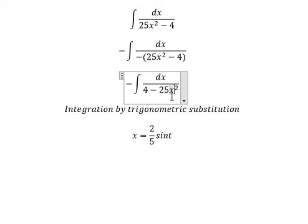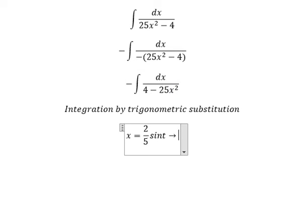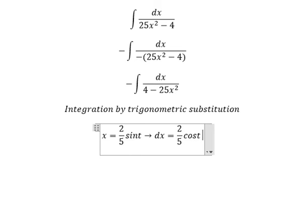We can do factorization 1 minus sine² t, we change for cosine² t. Later, we simplify dx. dx we got 2 over 5 cosine t dt.